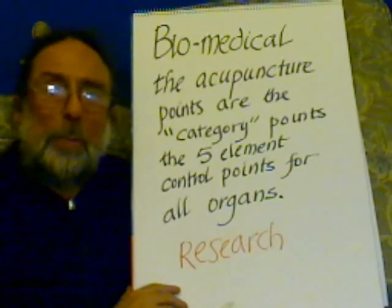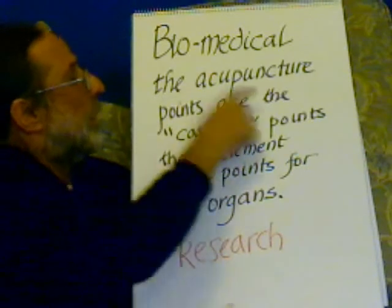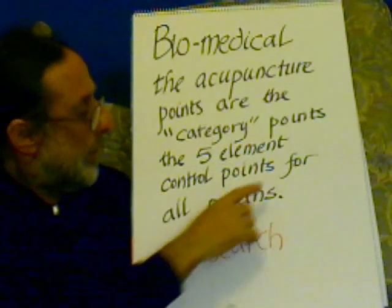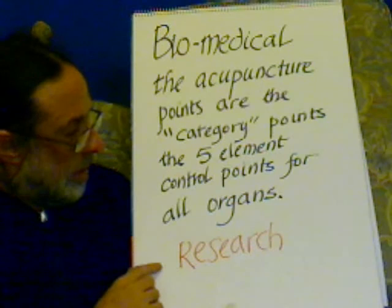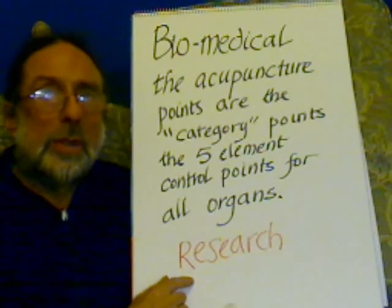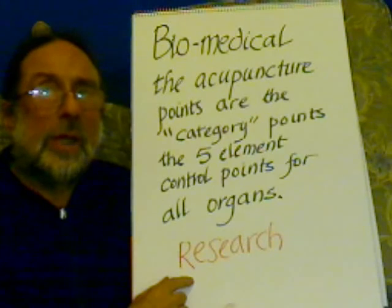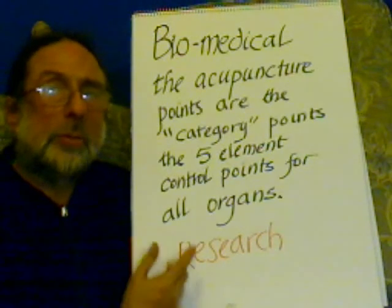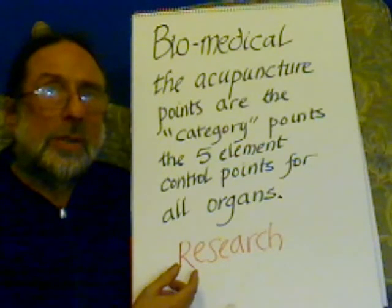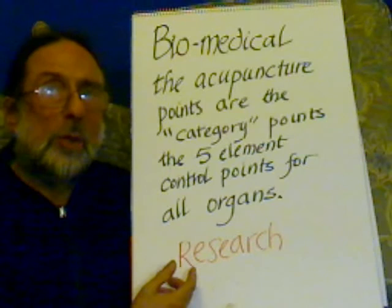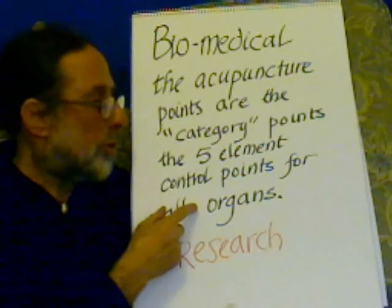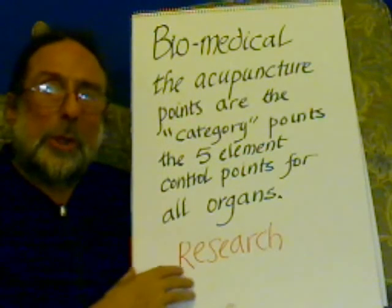For the biomedical science, the acupuncture points are the category points — the five elements, the five element control points for the organs of the body. This should be an area of research. We can use electromagnetic degaussers, magnetic oscillators, to stimulate the acupuncture system according to these category points. That's why these symptoms tie in with the meanings, because this is a real system, a real energy system. So it should be researched on the category points, which sort of control the function and energy levels of all the major body organs.